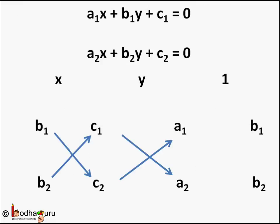The following diagram may help us remember it. For X, we start with the next coefficient B1 cross-multiplied by C2, minus B2 cross-multiplied by C1. For Y, we take the next term C1 cross-multiplied by A2, minus C2 cross-multiplied by A1 — rotating back since there is no term to the right. For 1, we start with the first term A1 cross-multiplied by B2, minus A2 cross-multiplied by B1.